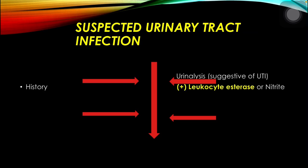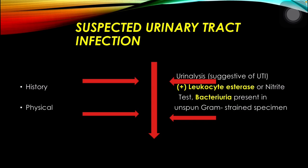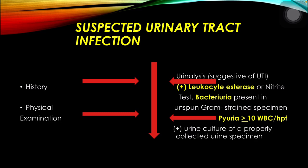History and physical examination should be taken, and a urinalysis should also be performed. Results suggestive of UTI may include positive leukocyte esterase or nitrite test, bacteria present in an unspun gram-stained specimen, pyuria of more than or equal to 10 WBC per HPF, and a positive urine culture.